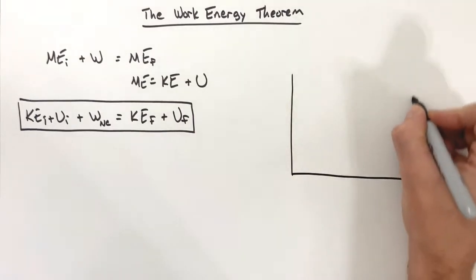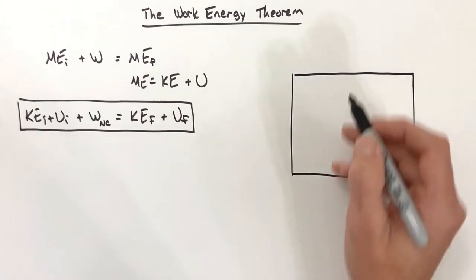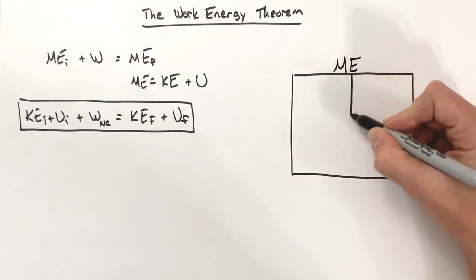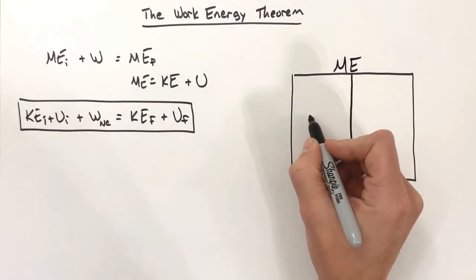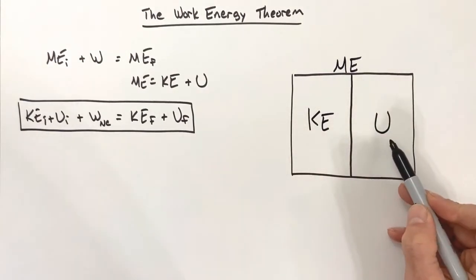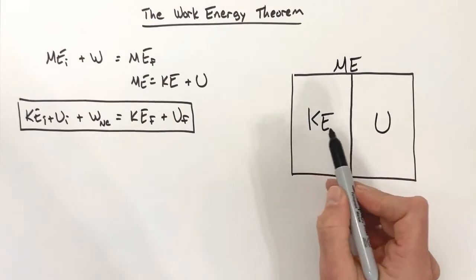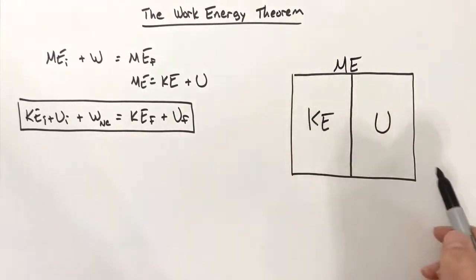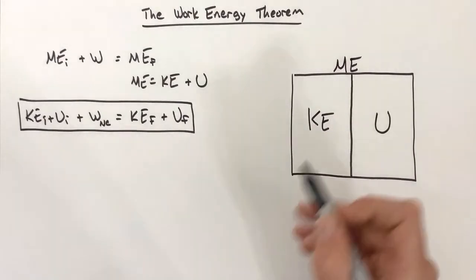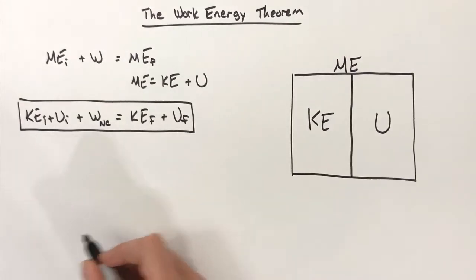To help understand, I want to visualize this equation. I'm going to use a box to represent the mechanical energy of some object — this could be any object. Mechanical energy is broken up into two parts: kinetic energy and potential energy, which could be gravitational or elastic potential. These are the two types of energies within the category of mechanical energy, and anytime work is done we ultimately change the total amount of energy in an object.